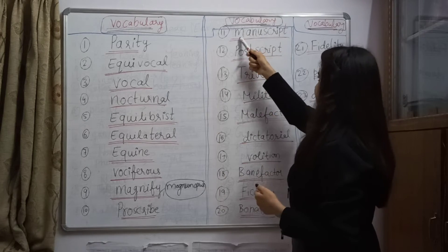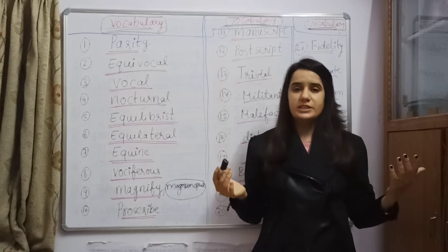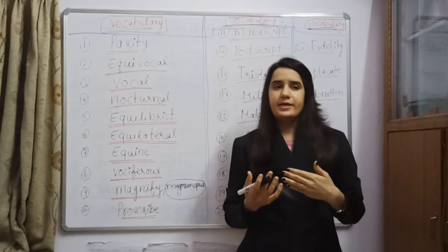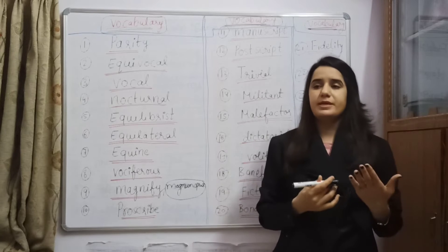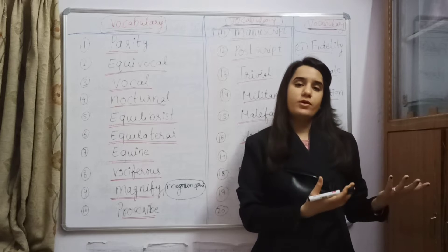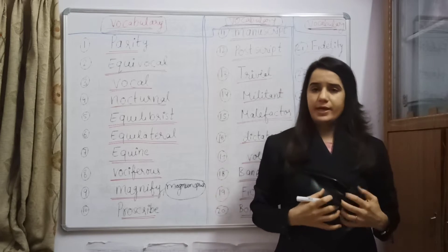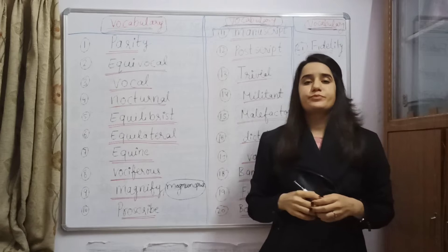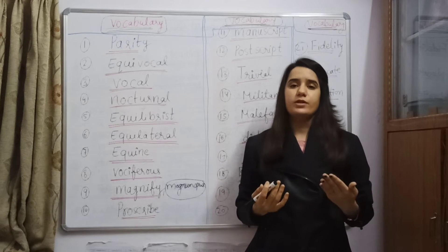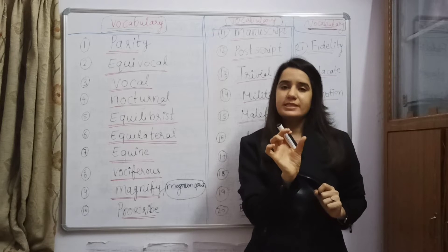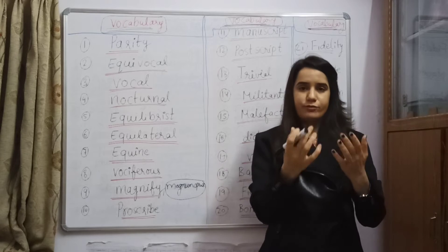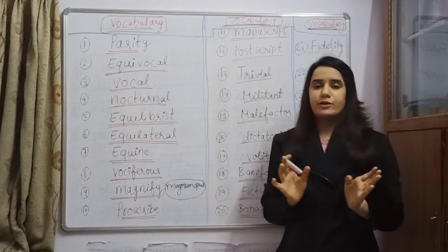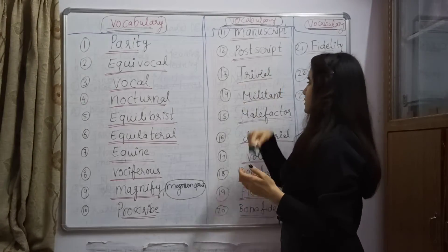Eleventh is manuscript. Manu means hand and script means to write. There was some era when there were no machines, so something which is now written by machine but was written by hand — we can say it is a manuscript. Twelfth is postscript. Post means after, script means to write. When you write a letter and the letter is complete but you write some extra message at the end, after the letter is done, then that is a postscript.